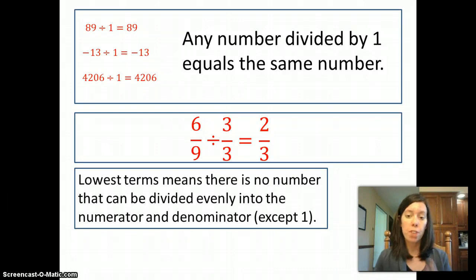Lowest terms means that once you have the fraction in lowest terms, there is no other number that can be divided into both the numerator and the denominator besides 1. So there's no common divisor between 2 and 3 except for 1. That's how we know that 2 thirds is written in lowest terms.